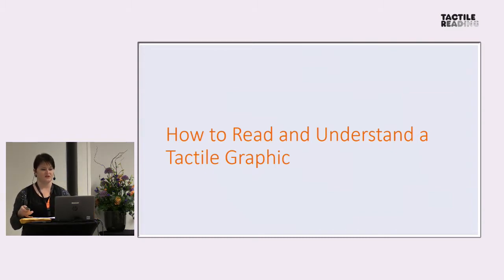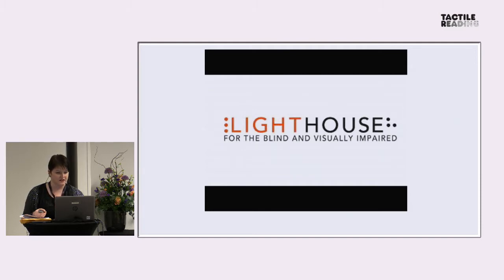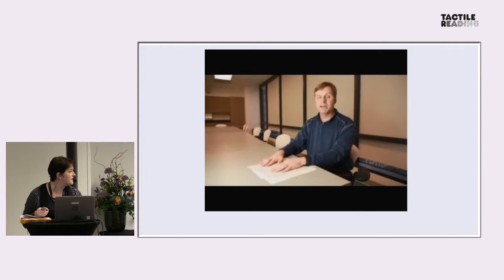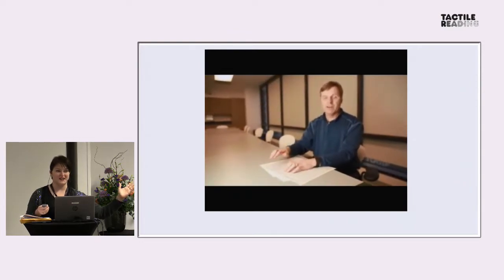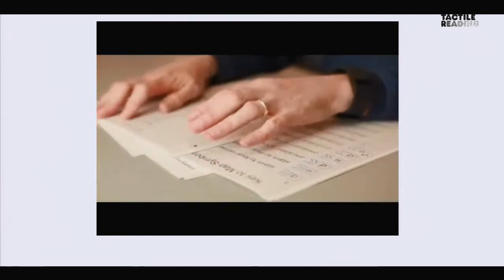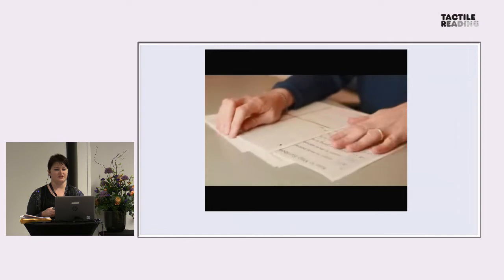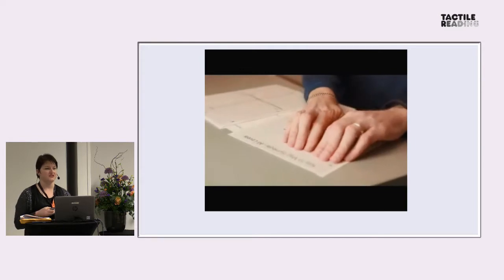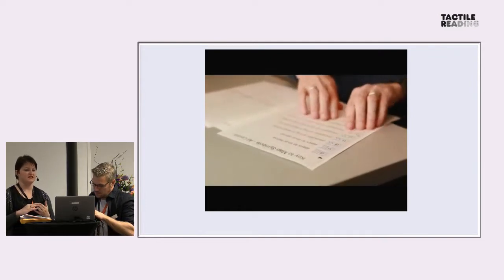To illustrate how to read and understand a tactile graphic, I'm going to play a short video from one of my colleagues explaining how he, as a blind person, interacts with a tactile graphic. This is Frank — my colleague at the Lighthouse for the Blind — and he is exploring a map of the 16th Street BART station at street level. The first thing he does is get an overview of the map, then look at the key to explore the symbols, such as staircases, escalators, and bus stops.